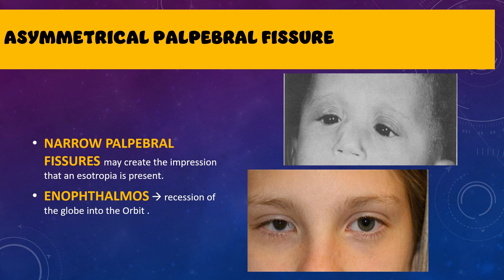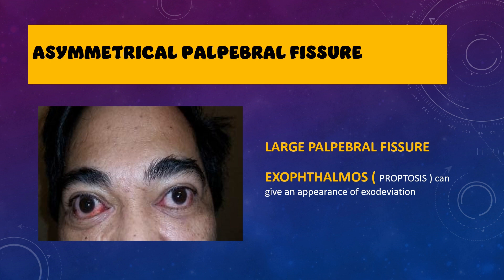Another cause of pseudo-strabismus is asymmetry in the palpebral fissure width. Very narrow palpebral fissures create an impression as if the eyes are deviated inwards, giving an appearance of pseudoesotropia. Similarly, enophthalmos — recession of the globe inside the orbit — also gives an appearance of esotropia. On the contrary, very large palpebral fissures, or protruding eyeballs (proptosis or exophthalmos), give an appearance of an exodeviation.